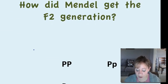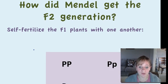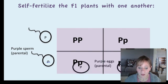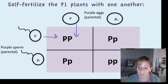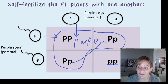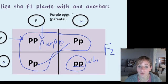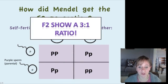How did Mendel get the F2 generation? He self-fertilized the F1 plants with each other. Setting up the Punnett square: on this side we have big P, little p, and up here we have big P, little p. When we fill it in we get one PP (big P, big P), two Pp (big P, little p), and one pp (little p, little p). This shows the three-to-one ratio — those three with at least one big P are all purple, and the one with no big P is white. This is the F2 generation generated by self-fertilizing the F1.